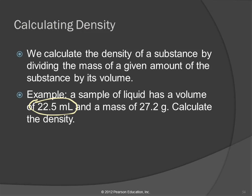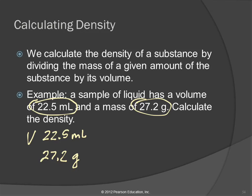We want to read the question and pick out the numbers — it can be helpful to write them down, especially if you're working from a computer or book where you can't just circle them. So: V for volume, 22.5 milliliters; and a mass of 27.2 grams. The problem actually identifies them for us. But when we pull it out and write it like this, we get rid of the distracting words and we can see what we've got.